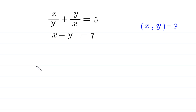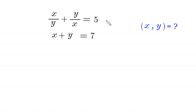Hello everyone, you are welcome. We will solve this system: x over y plus y over x is equal to 5, and x plus y is equal to 7. Our job is to find all possible values of x and y. Let's call the first equation 'Equation 1' and the second 'Equation 2'.